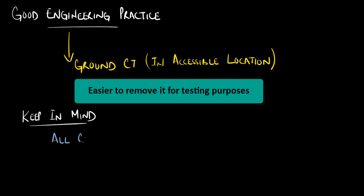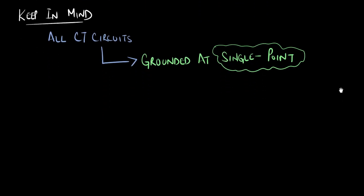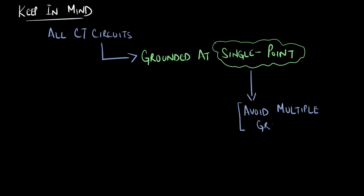Keep in mind that all current transformer circuits are to be grounded at a single point only. This is to avoid the occurrence of multiple ground loops, which can cause the relay connected to the secondary winding to trip under false conditions.